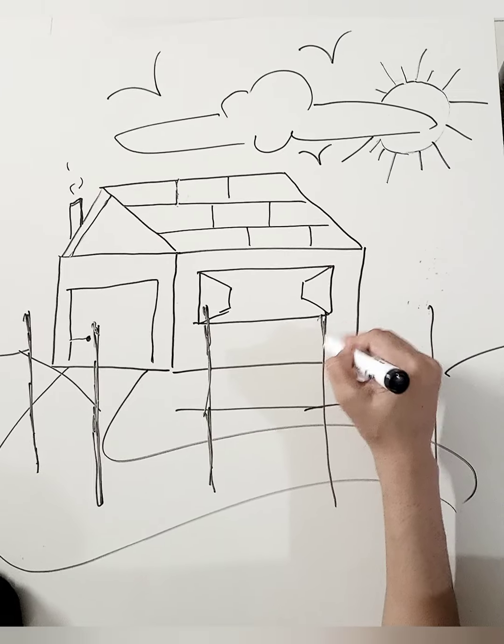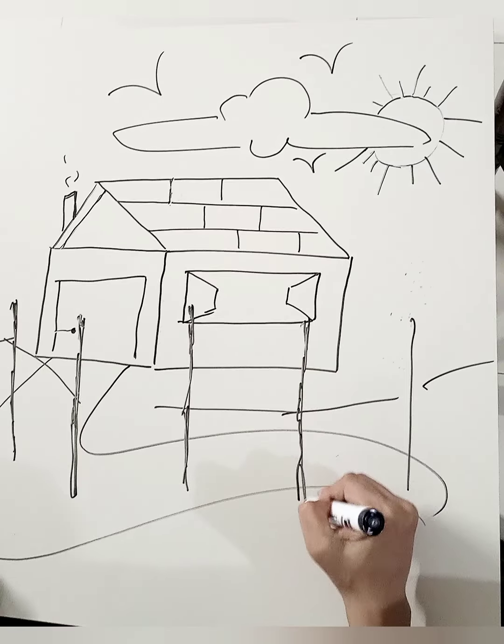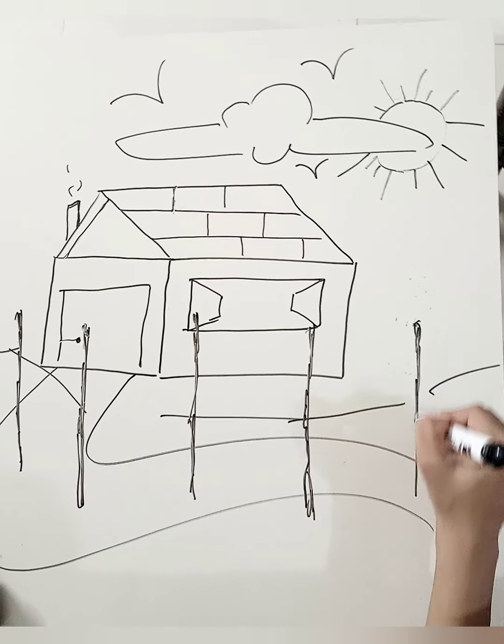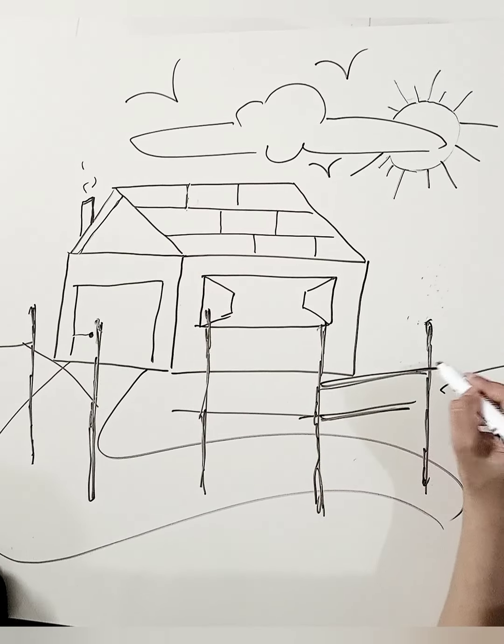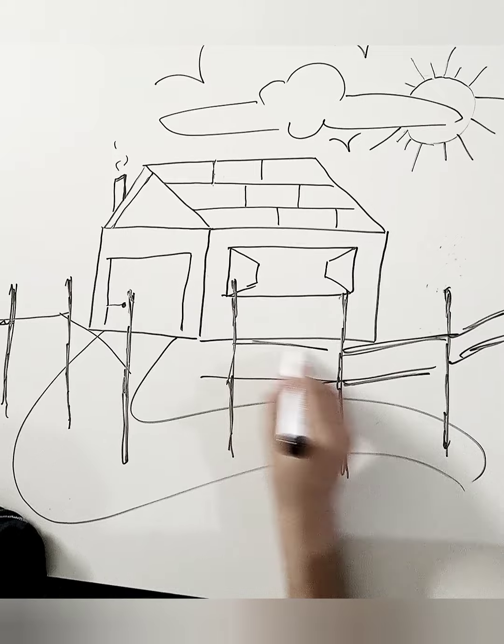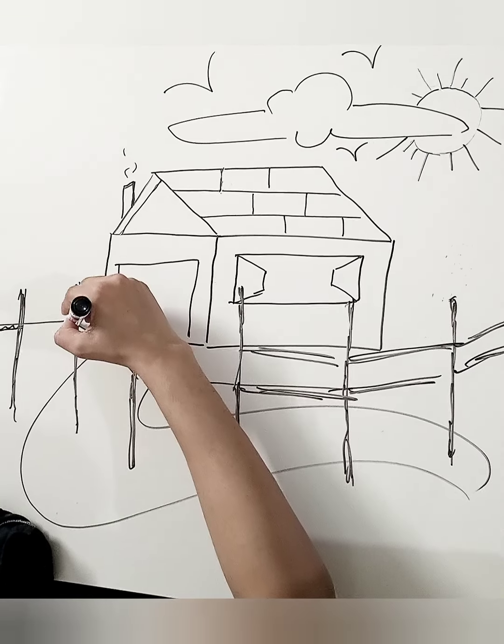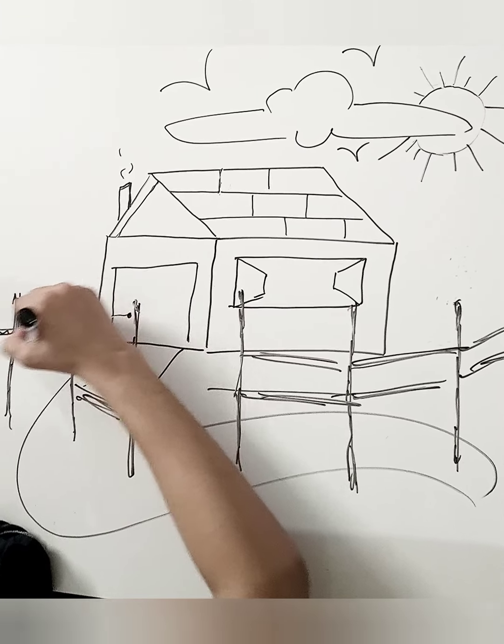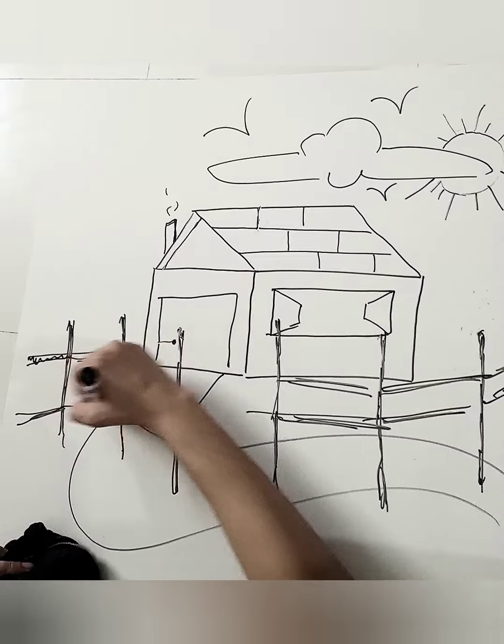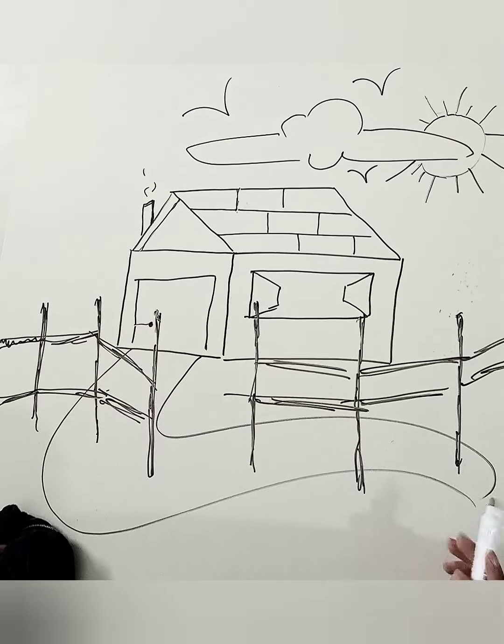Double the lines. You can make it on paper. I'm just drawing it on the whiteboard, so that's why I have to double the lines. This is the fence.